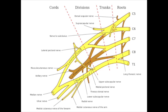The main components of the brachial plexus are roots, trunks, divisions, cords, and terminal branches.